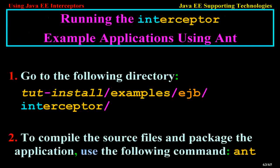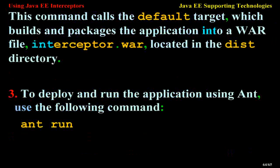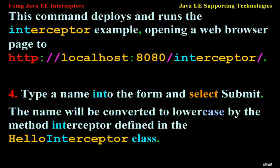Running the Interceptor example using Ant: go to the directory tut-install/examples/ejb/interceptor. To compile and package the application, use the command 'ant', which calls the default target and builds and packages the application into a WAR file. To deploy and run the application, use the command 'ant run'. This deploys and runs the interceptor example, opening a web browser to http://localhost:8080/interceptor. Type a name into the form and select Submit — the name will be converted to lowercase by the method interceptor defined in the HelloInterceptor class.